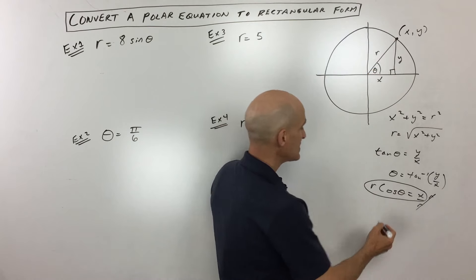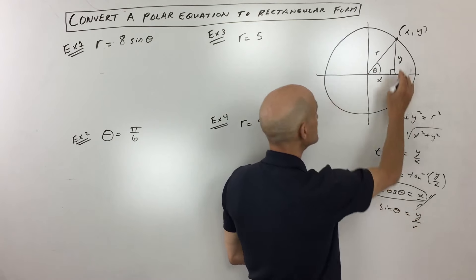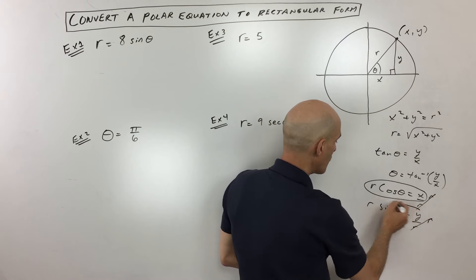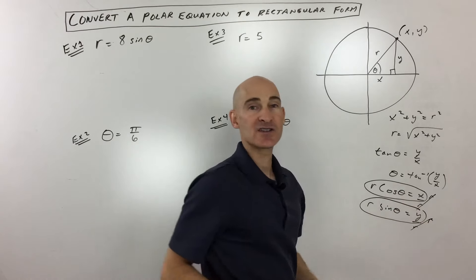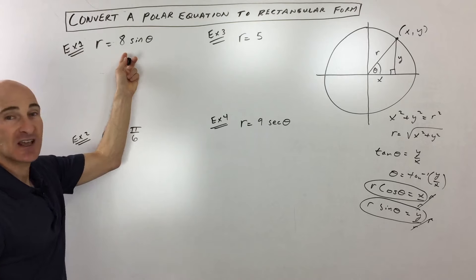And then the sine of theta is equal to opposite over hypotenuse, which in this case is y over r. And again, if you multiply both sides by r, you can see that y is equal to r sine theta. So we're going to be using all these relationships to convert from polar to rectangular.